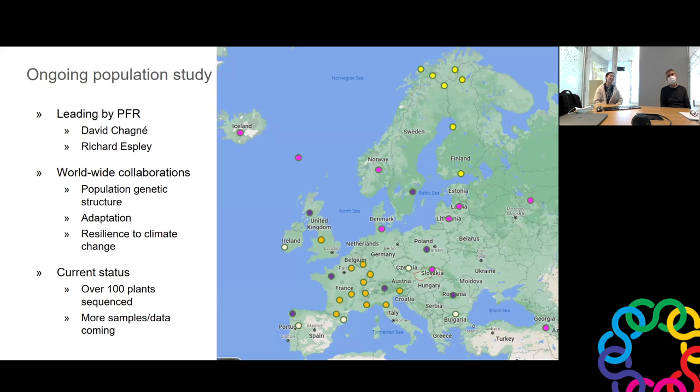And we also would like to say something about our exciting population study in Bilberry. It is a worldwide collaboration to look at population genetic structure, adaptation, and resilience to climate change in Bilberry. So currently there are over 100 plants sequenced already, and there are more samples and data on the way. So if you look at this picture, the dots actually represent the locations, either that we have the samples already or we are going to do some sampling. And one of our collaborators actually at the moment is at the Faroe Island to collect some samples, so that's amazing. And this is going to be some big studies as well.